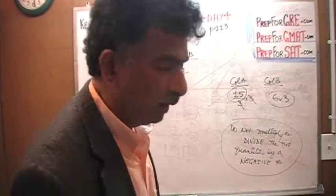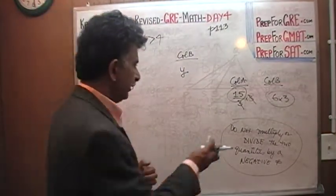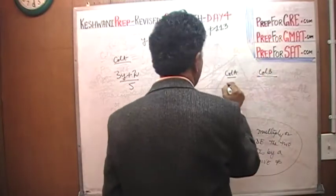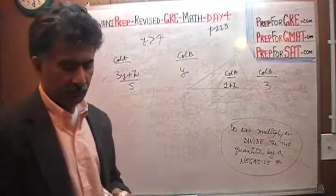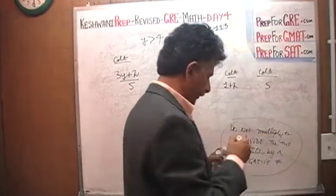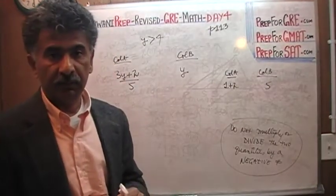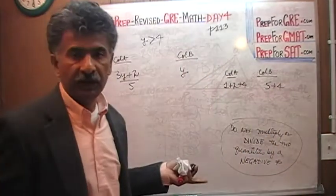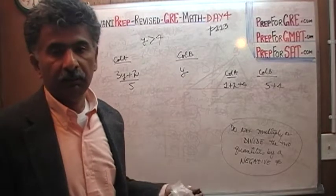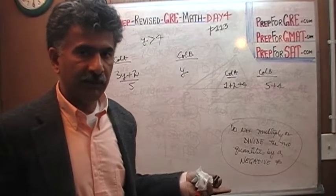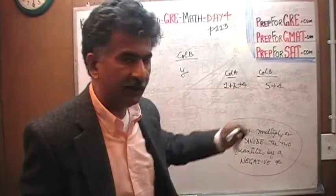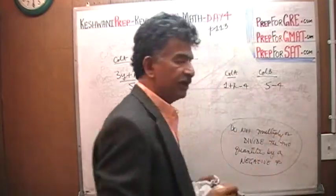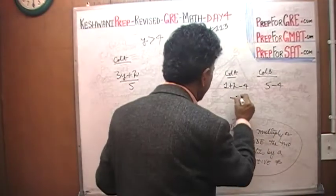You can also add or subtract the same number from both columns without changing anything. For example, column A has 1 plus 2 and column B has 5. Column B is bigger. If I add 4 to both columns, the answer still doesn't change — it's still B. Because 1 plus 2 is 3, and 3 plus 4 is 7, which is less than 9. Similarly, if I subtract 4 from both columns: 3 minus 4 is negative 1, and negative 1 is still less than positive 1. The answer remains B.